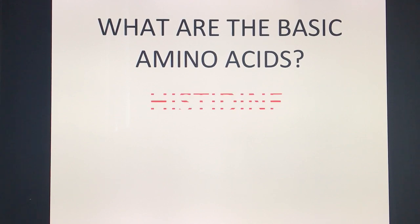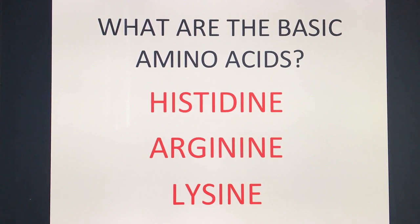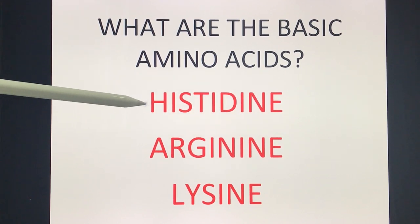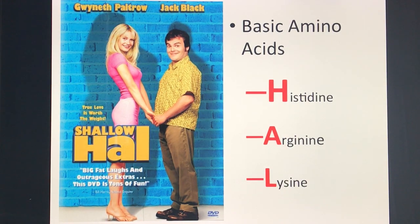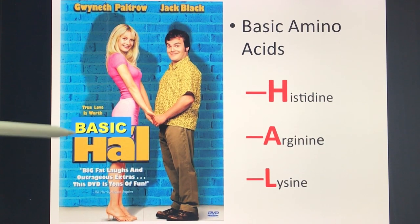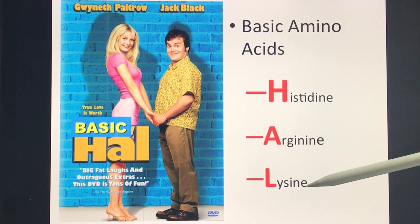Must-know board exam question: what are the basic amino acids? They are Histidine, Arginine, and Lysine — HAL. To remember this, think of the movie 'Shallow Hal' — make it basic: HAL. So the basic amino acids are H-A-L: Histidine, Arginine, and Lysine.